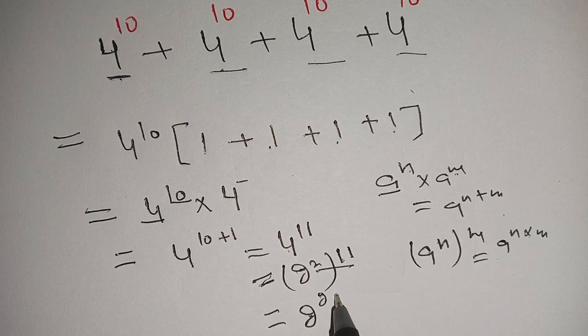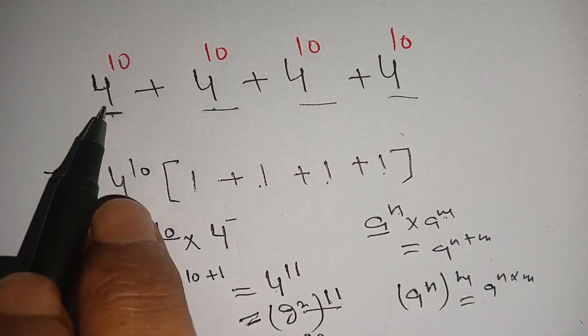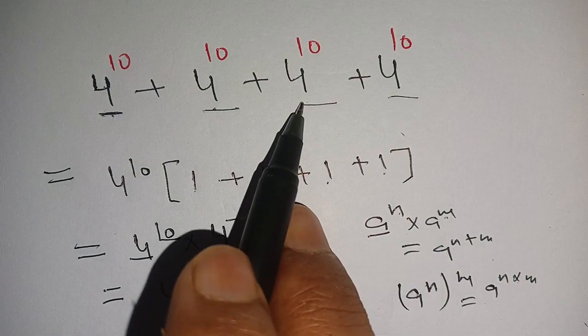Thus, 4^10 + 4^10 + 4^10 + 4^10 equals 2^22 in simplest form.